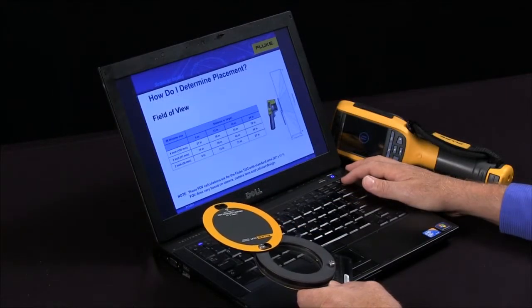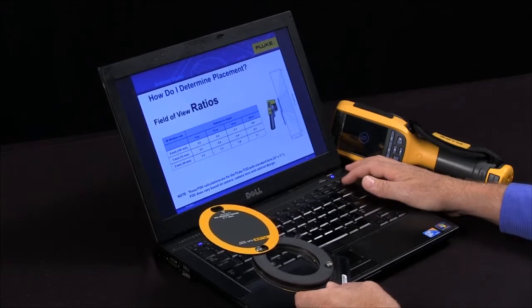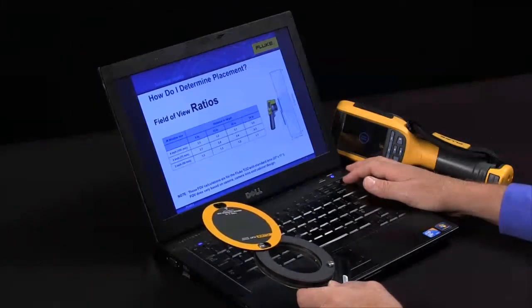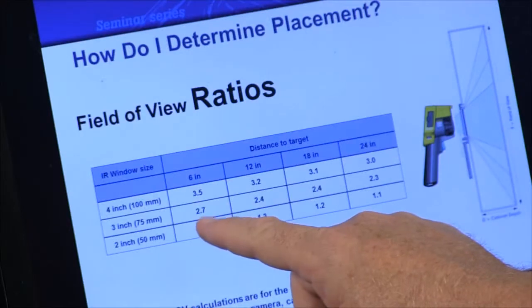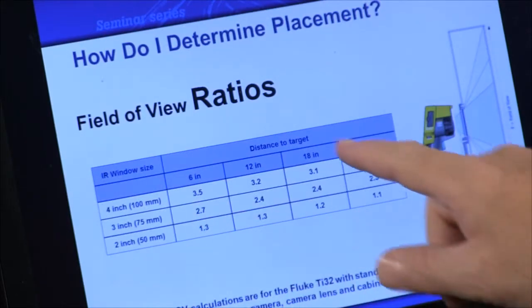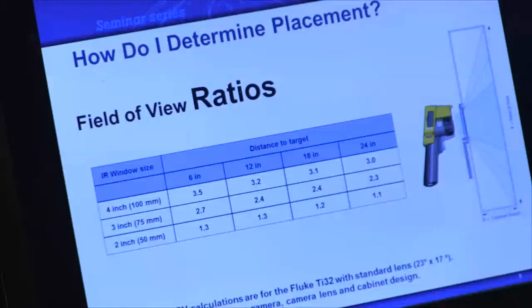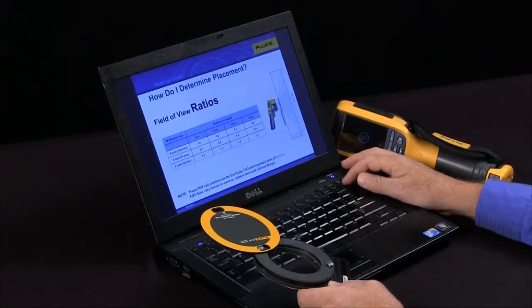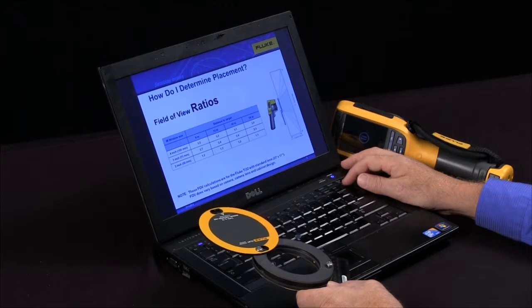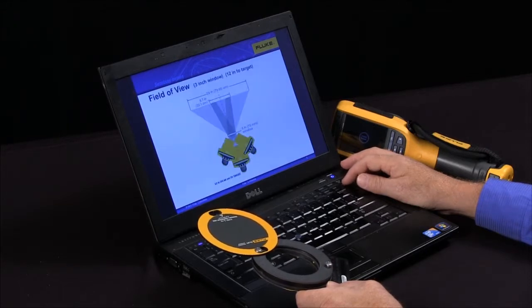There are some ratios that we can work with. If you're looking at six inches you'll have a 2.7 ratio. If you're looking at 18 inches you'll have 2.4. So this can help you determine where you want to place the windows as well as what size window you need.